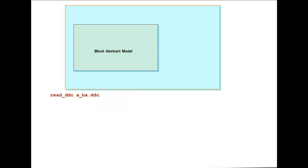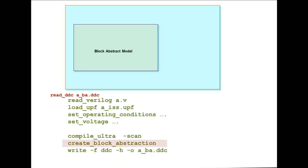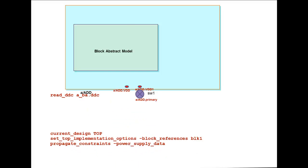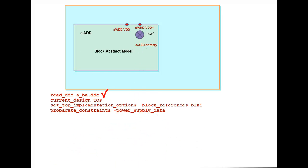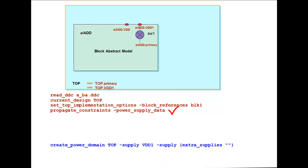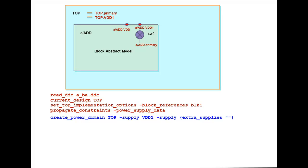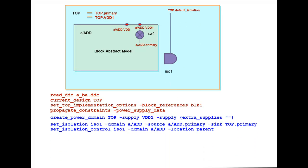Block abstraction models capture all the block level data including UPF. Here is a sample DC script. To create a block abstract model, we use the create_block_abstraction command. At the top level, there is a difference compared to the previous flows: we read the block abstract dot DDC, enable block abstraction settings, and then run propagate_constraints -power to make block level UPF data visible at the top. Then we create all the top level UPF constructs and the associations of supplies.